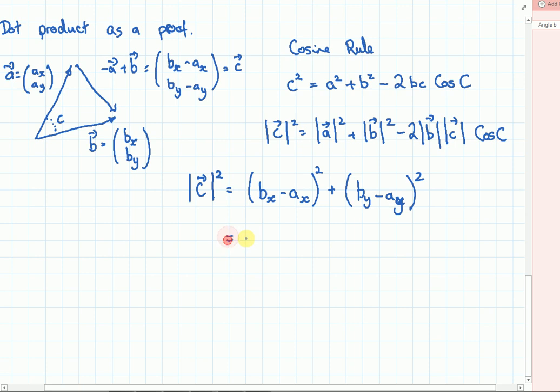Multiply these bits out and we get BX squared minus 2AXBX plus AX squared. Plus the Y parts, the BY squared, minus 2AYBY plus AY squared.